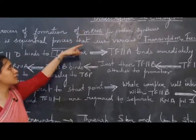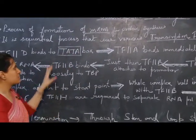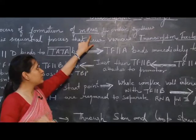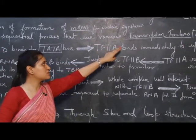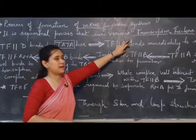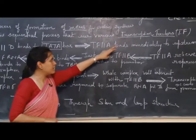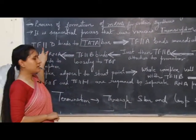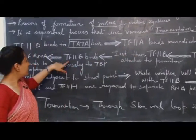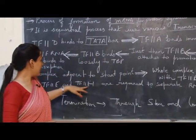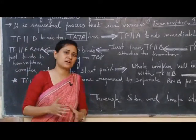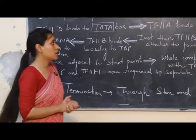Now how does this occur? These are the steps. In the process of synthesis of this particular strand of mRNA, we require various transcription factors which are called Tf. For example, like TfD, TfA, similarly TfB, then TfH, TfE. So these all are the transcription factors which are required for the process.